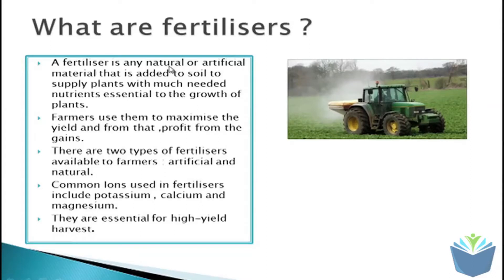The two types are artificial and natural. The types of things that they contain would be ions, potassium, calcium, and magnesium. Without them, we would not get the high yield that we would normally get — the kind you find in supplies to supermarkets — which means that farmers can actually turn a profit.